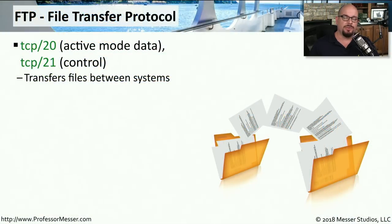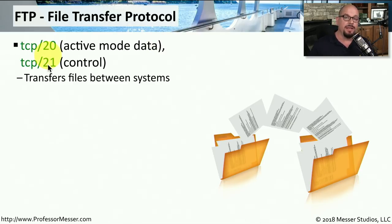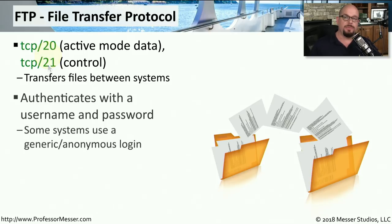One of the first ways to transfer a file from one device to another uses a protocol called FTP, the File Transfer Protocol. This protocol uses TCP port 20, which we call the active mode data port, and there is a TCP port 21 that's used to control the communication. FTP does have security built in, so you can configure a username and a password. FTP also supports a mode called anonymous login, where you can use the username anonymous and then any password you'd like.